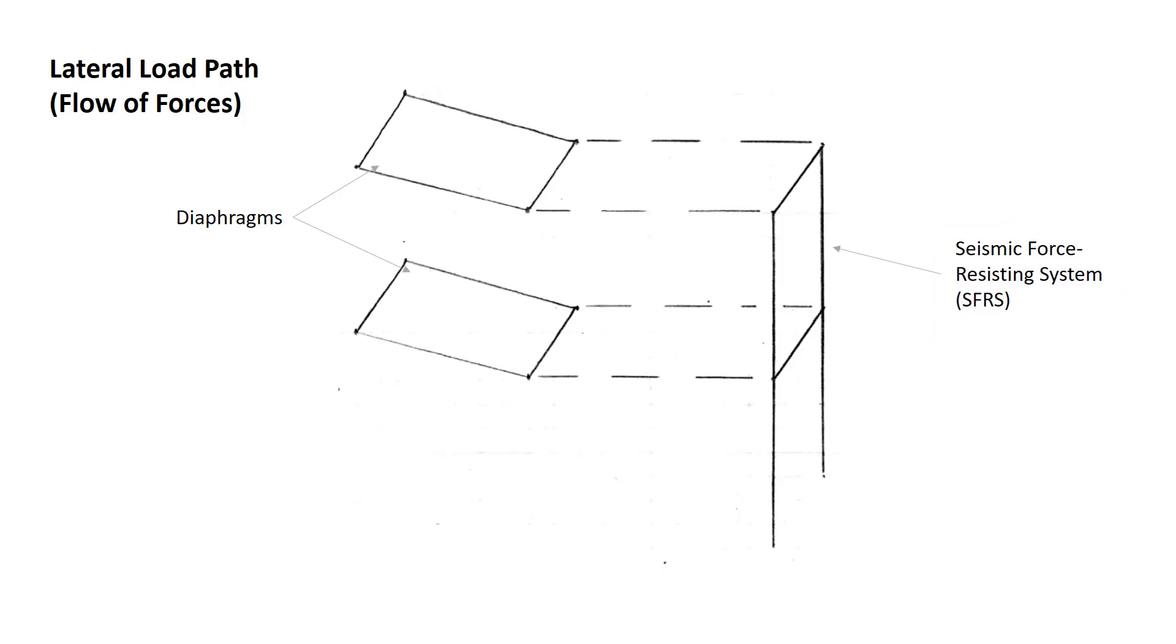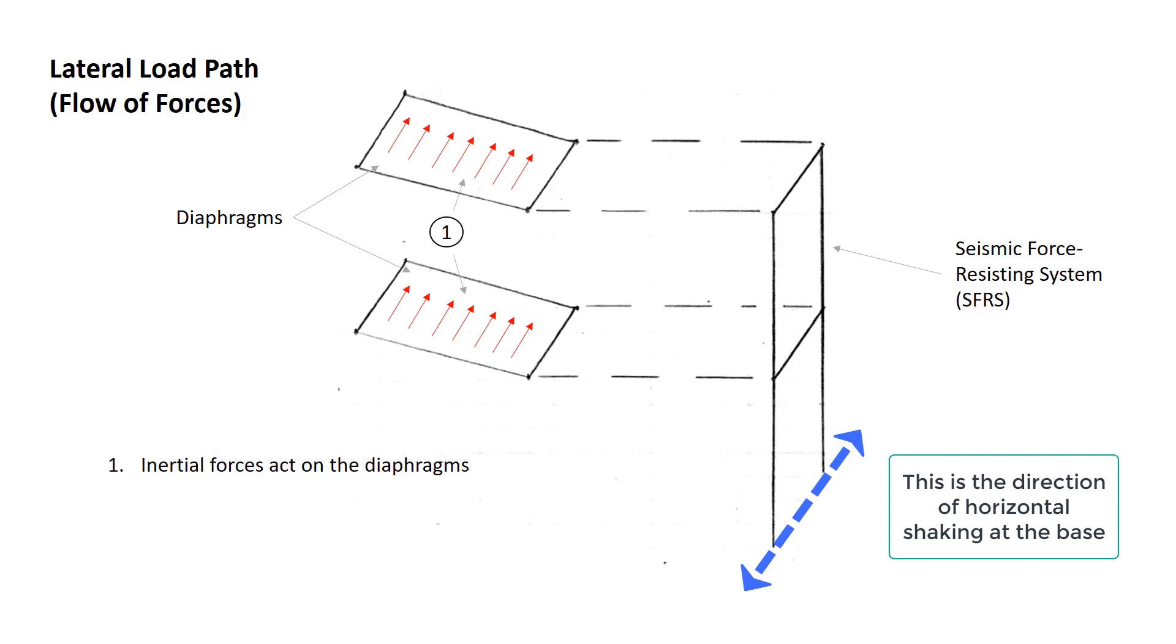Let's go through the various stages and how the forces are generated, and how they travel through the building to the foundation. Step 1: Inertial forces act on the diaphragm. The base of the building moves laterally. This causes the building to move laterally. That lateral motion is resisted by the inertia in the diaphragm. This force is shown distributed because the mass is distributed.